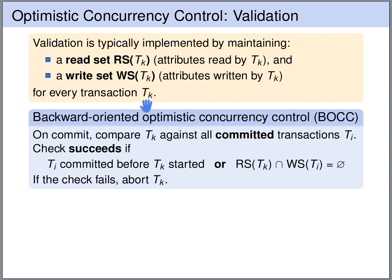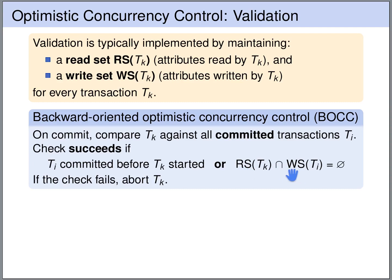In backward-oriented optimistic concurrency control, when a transaction Tk tries to commit, we compare Tk against all committed transactions Ti. We check whether Ti committed before Tk started — if so, that's fine and we ignore it. If Ti committed after Tk started, we check whether the read set of Tk has no overlap with the write set of Ti. An overlap means Tk may have read an old value that was since overwritten by Ti. If that is the case, we must abort Tk.